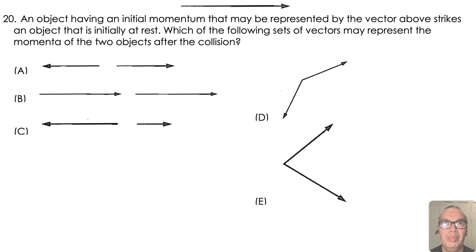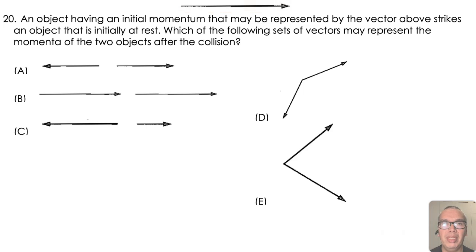An object having an initial momentum that may be represented by the vector above strikes an object that is initially at rest. Which of the following sets of vectors may represent the momenta of the two objects after the collision?